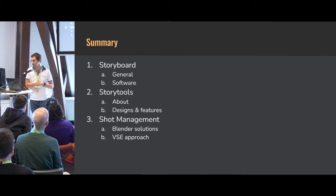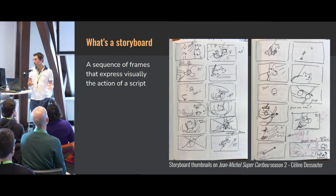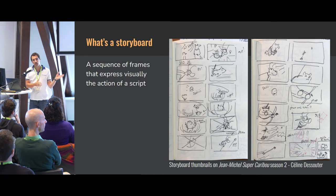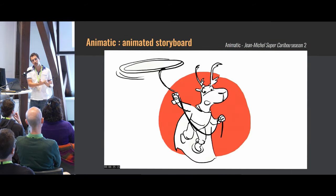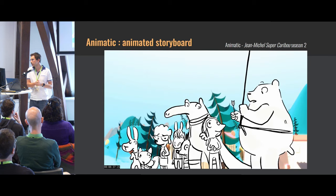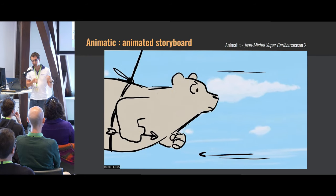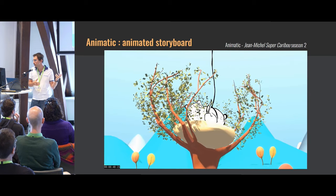Now I'm going to talk about storyboarding in general, then Story Tools specifically — the add-on I'm developing — then one or two words about shot management. Quickly, what's a storyboard? It's a sequence of frames that visually expresses the action of a script. Once we have that, we usually go to an animatic, which is an animated storyboard. Here is an example on Jean-Michel Supercaribou season 2, a hybrid storyboard that is 2D in a 3D environment.